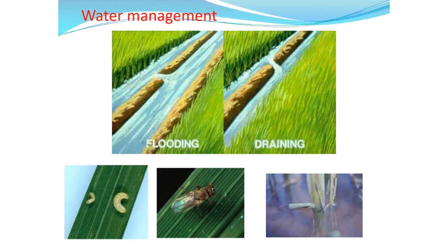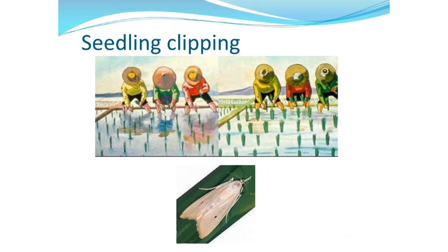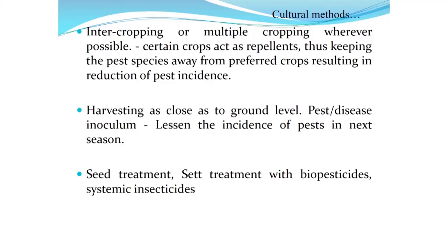Regarding water management, the International Rice Research Institute recommends alternate flooding and draining of the field at a period of five days to control whorl maggots, case worms, brown plant hopper, and different dipteran insects. Seedling clipping is also an important cultural practice because the rice stem borer lays eggs on the tips of seedlings; if tips are removed during planting or transplanting, the eggs are removed and infestation of that insect is prevented entirely from the field.